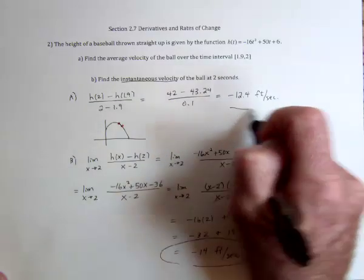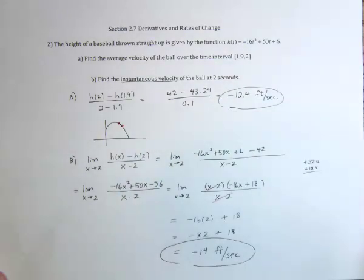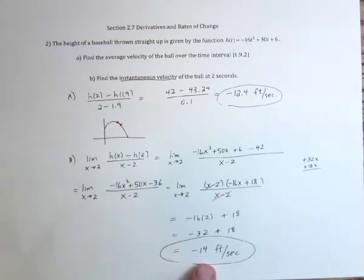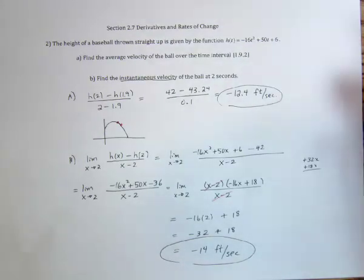So our estimate over here of negative 12.4 was okay, but to be more accurate, it's actually the instantaneous velocity, negative 14 feet per second.